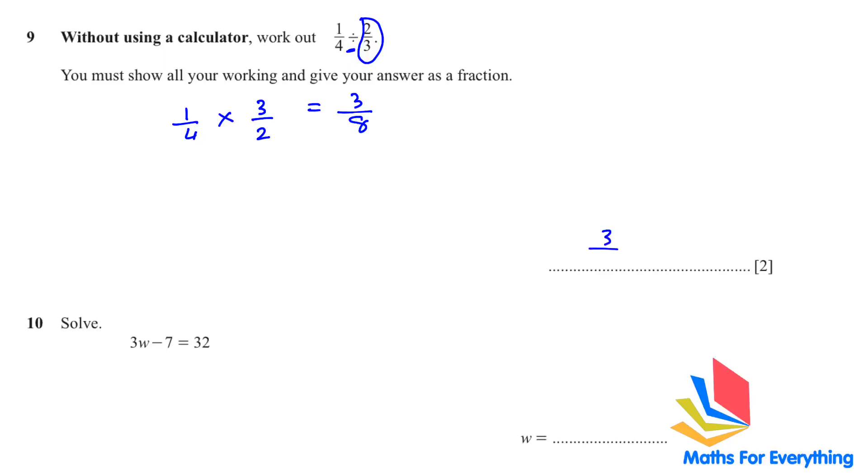Question number 10. Solve 3w minus 7 is equal to 32 and we have to find the w. The negative 7 when you move to the other side will be positive. So you have 3w is equal to 39. This 3w means 3 multiplied by w. This 3 when I bring to the other side, it will be a divide. W is equal to 39 divided by 3. Therefore, w is equal to 13.